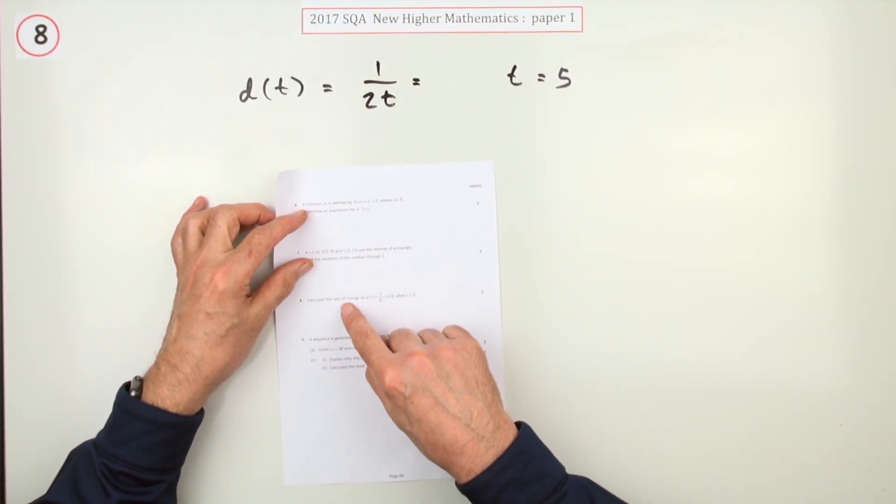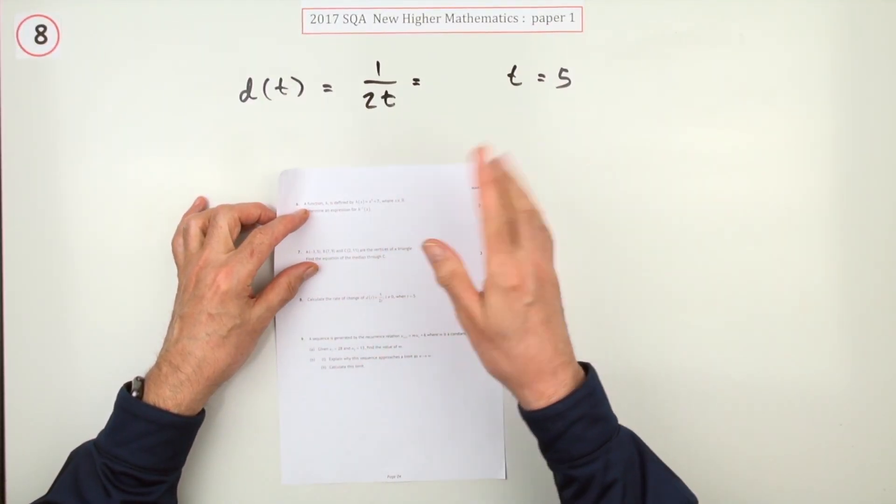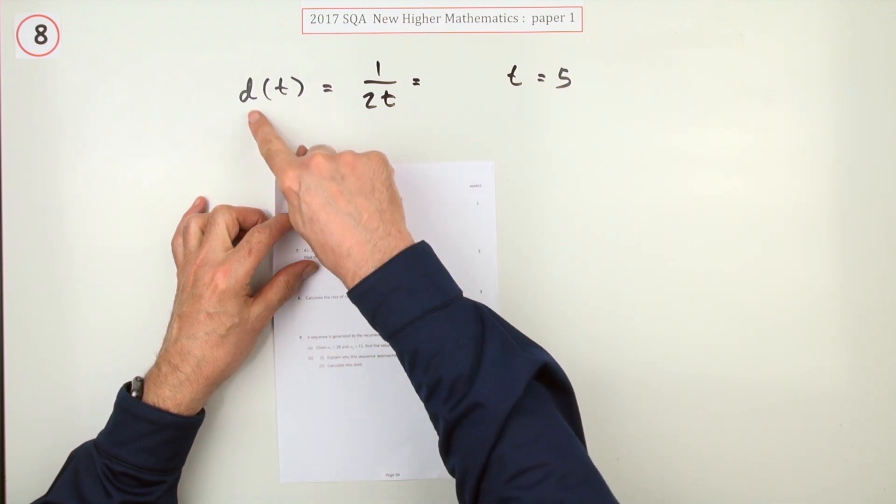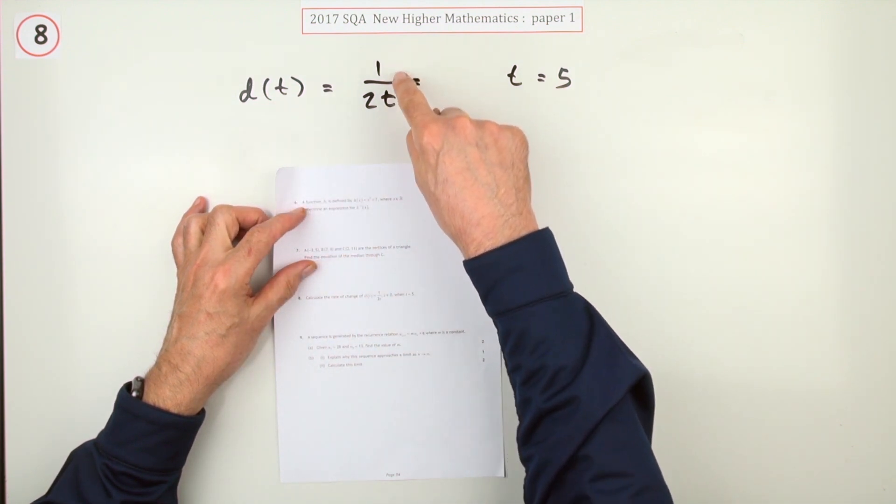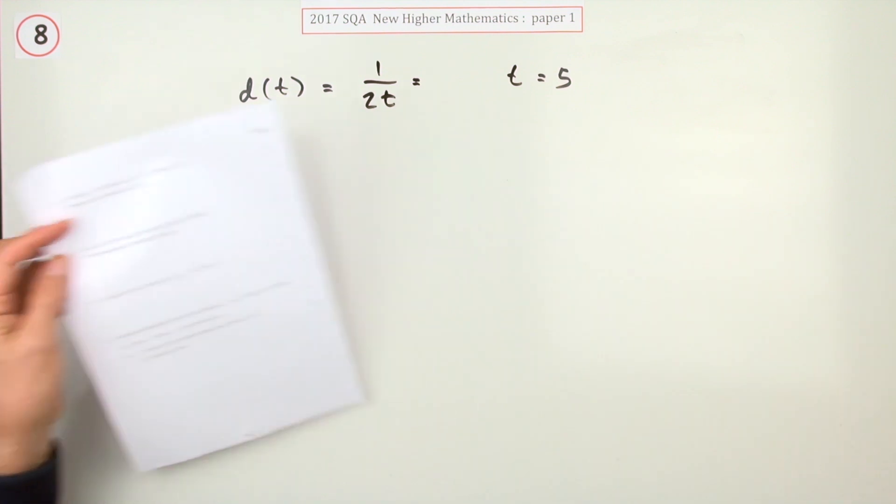So number 8 then, calculate the rate of change. Rate of change, that's the derivative. Calculate the rate of change of d as a function of t equal to 1 upon 2t when t is 5.